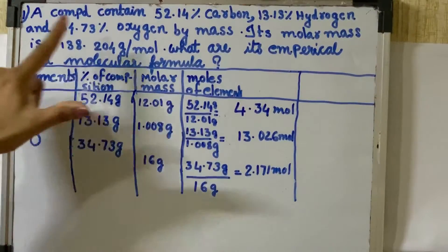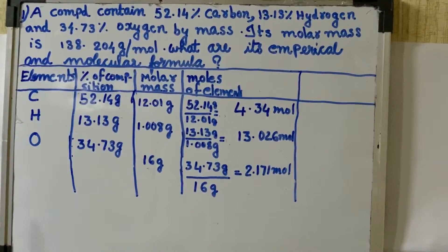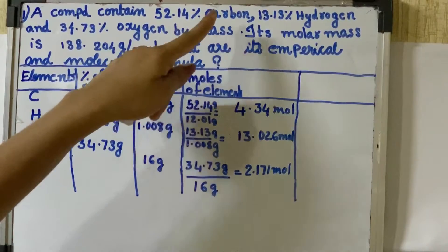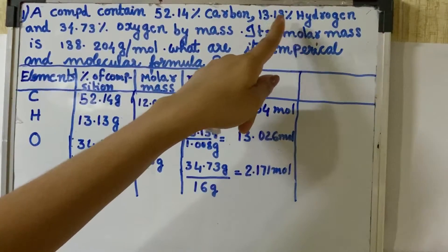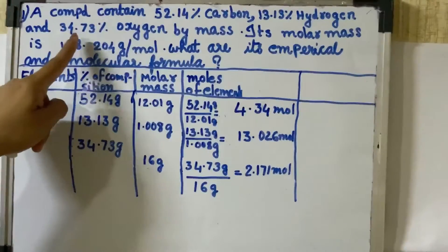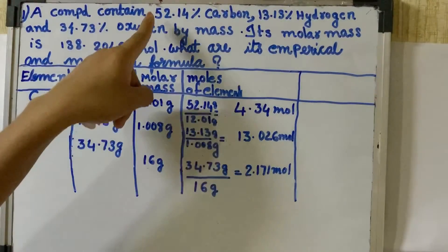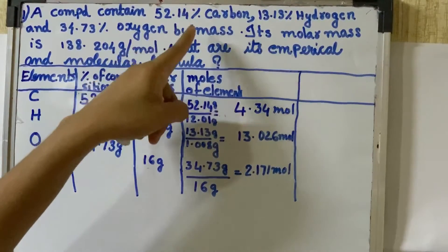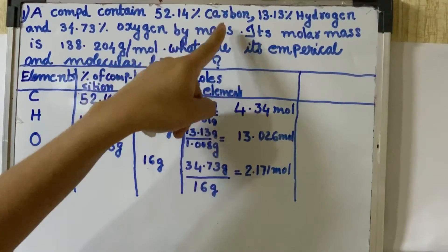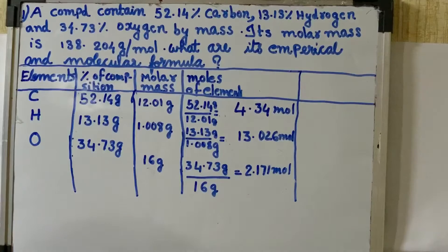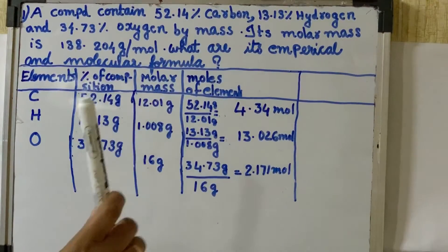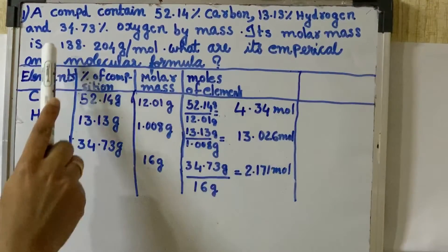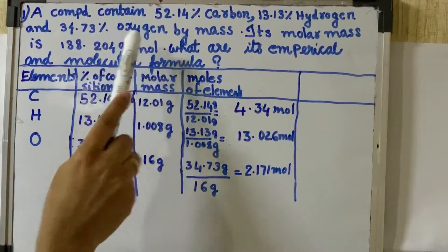Assume this compound contains 100 grams. So 100 grams of the compound gives us 52.14 grams of carbon, 13.13 grams of hydrogen, and 34.73 grams of oxygen by mass.